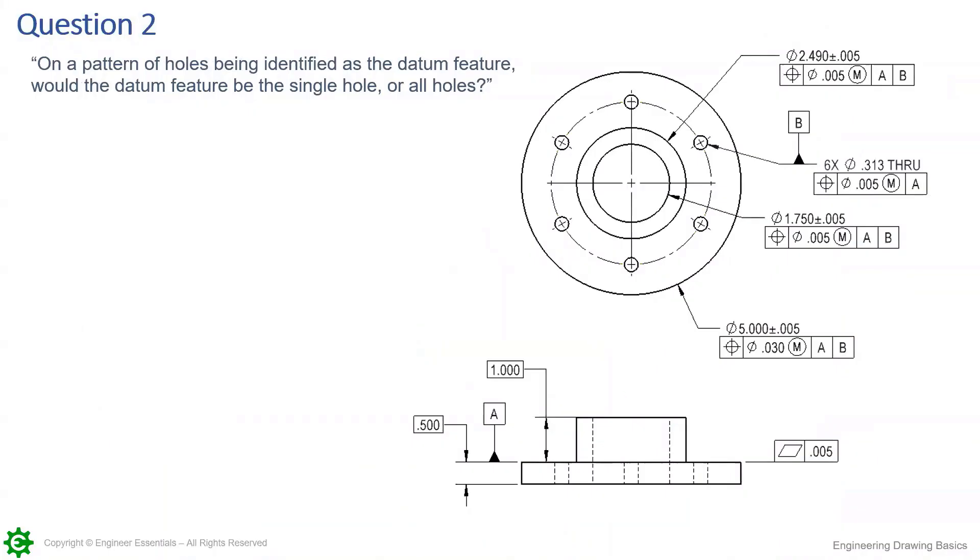Question two. This is a pretty easy one to clarify: on a pattern of holes being identified as the datum feature, would the datum feature be the single hole or all of them?